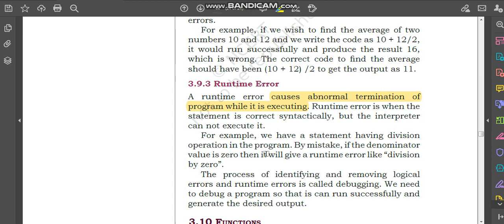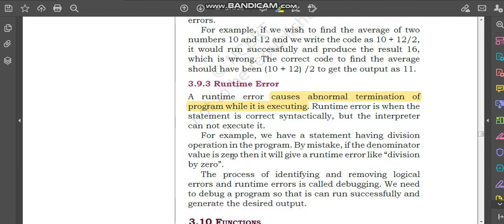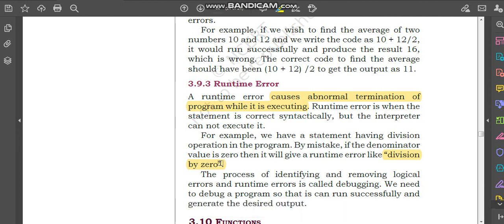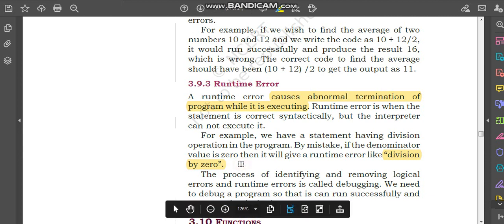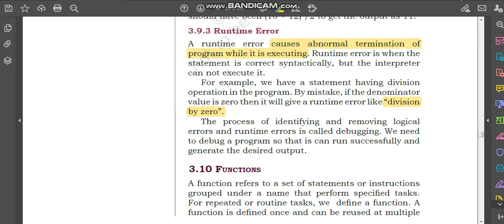For example, we have a statement having a division operation in the program. If the denominator value is 0 - mathematically, denominator 0 is wrong - it will give a runtime error like 'division by zero'. The division sign is proper, so syntax is correct, but since division by 0 is mathematically wrong, it will come as a runtime error and the program will terminate.